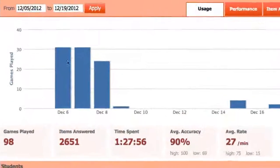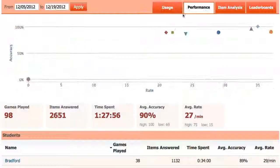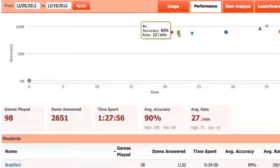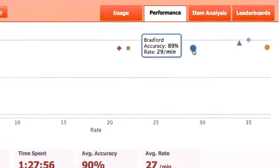The usage chart shows how often the students played. And the performance chart shows how well they did, with the vertical axis representing accuracy and the horizontal axis representing rate per minute.